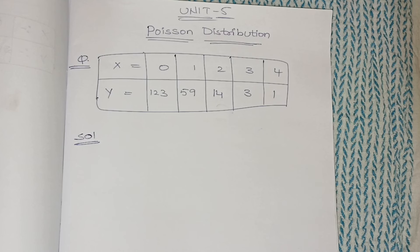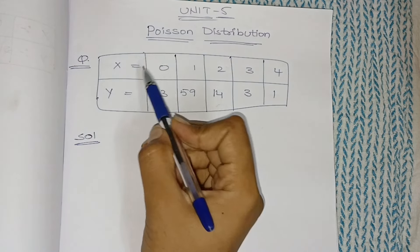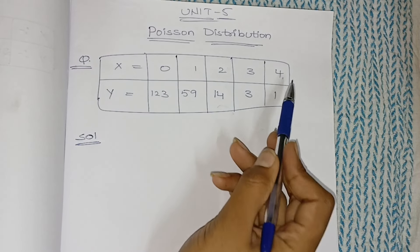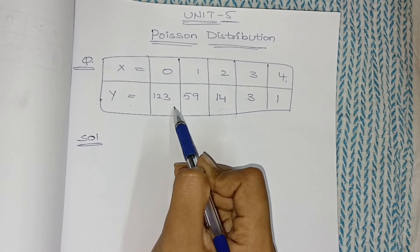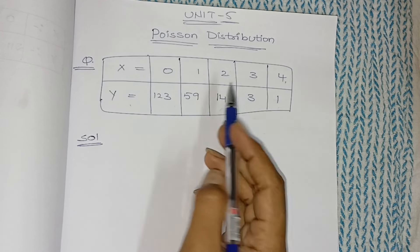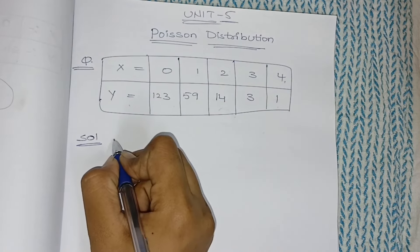Only Poisson distribution will be easy, so don't skip this video and watch till the end — then you can easily understand Poisson distribution. Make a note of whatever I am saying. Here in Poisson distribution, this is the table they have given: x values 0, 1, 2, 3, 4 and y values 123, 59, 14, 3, 1.